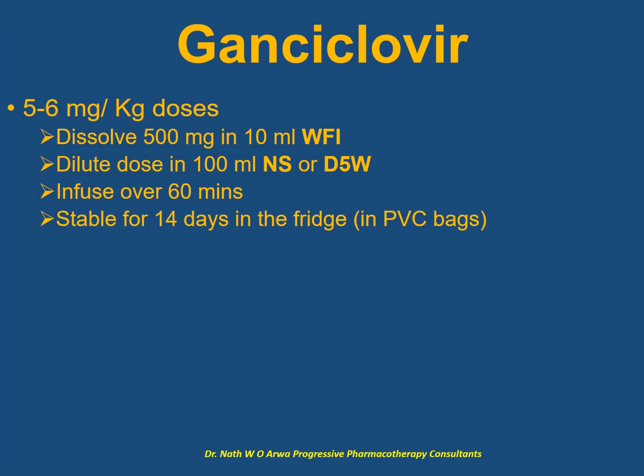For ganciclovir, for doses of 5 to 6 mg per kg, dissolve the contents of the 500 mg vial in 10 ml of water for injection, then draw the prescribed dose and dilute further in 100 ml of normal saline or dextrose 5%. The resultant IV solution should be infused over an hour, and it remains stable for 14 days in the fridge when the admixture is done in a PVC bag.